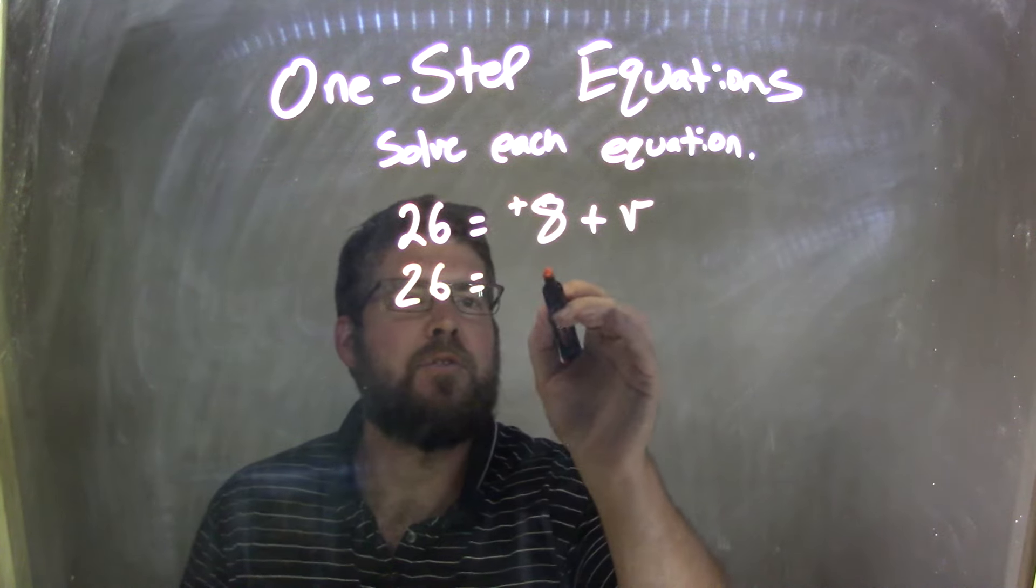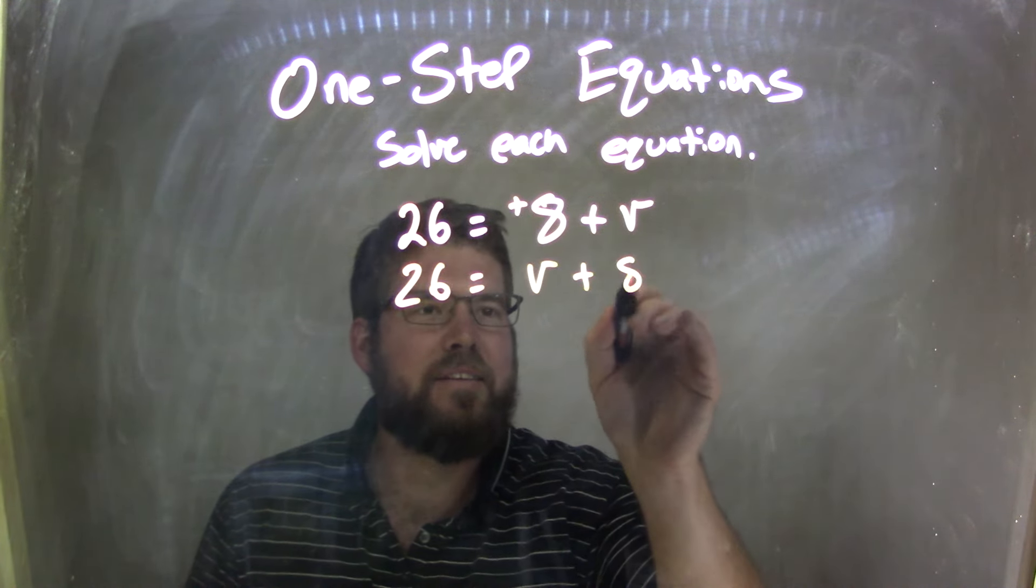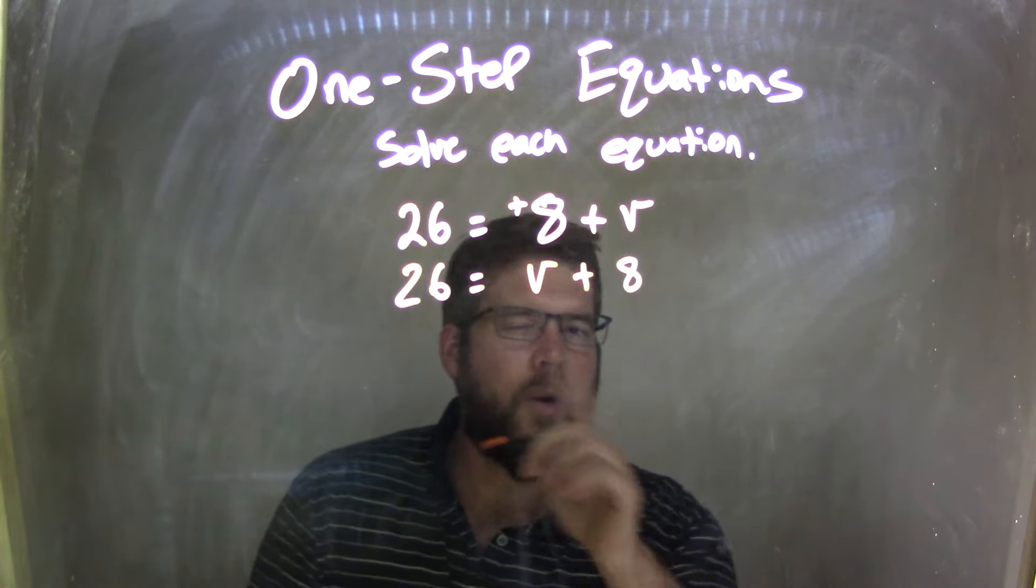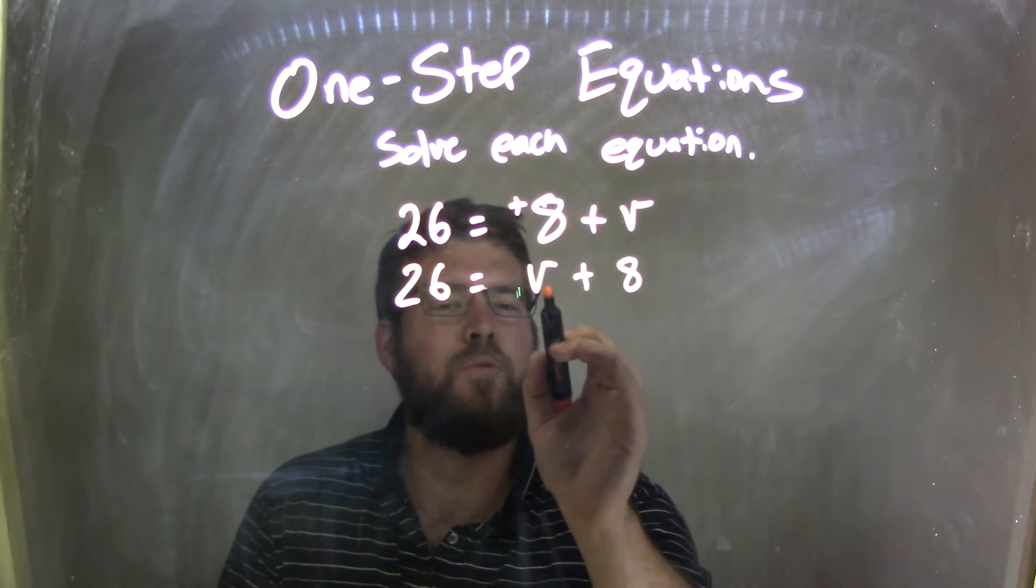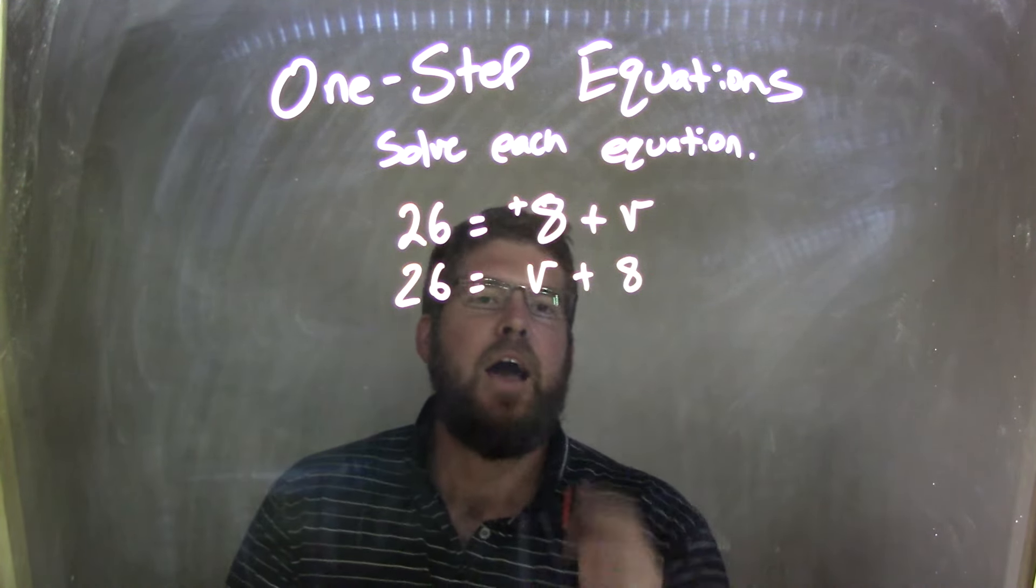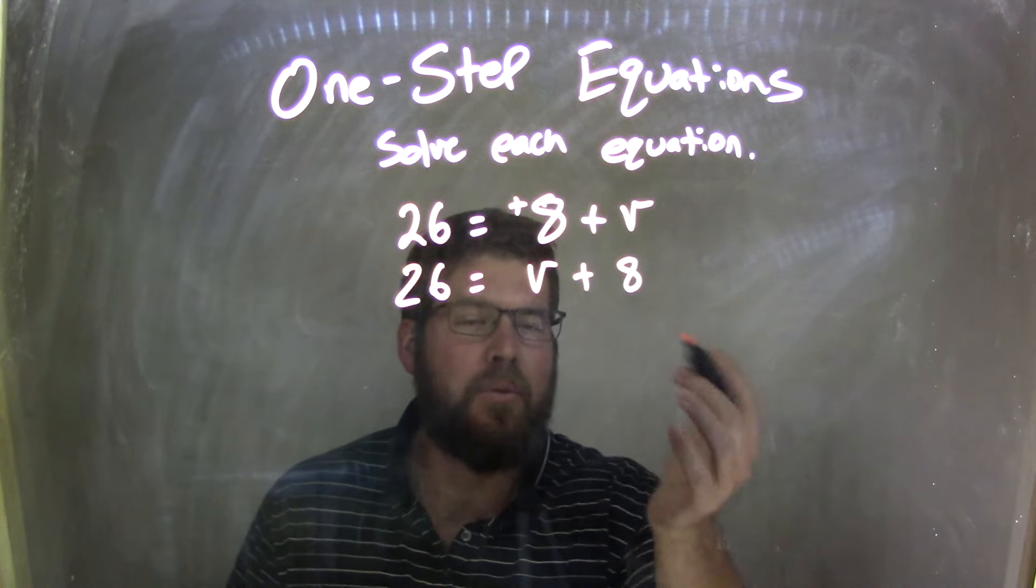If I move it to be 26 equals V plus 8, that might be easier to see. You normally don't have to do that, but I use the commutative property to rearrange V and 8. I'm allowed to do that because the commutative property says I'm allowed to.